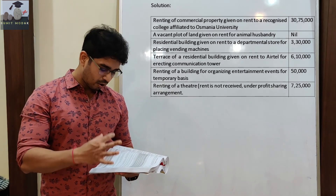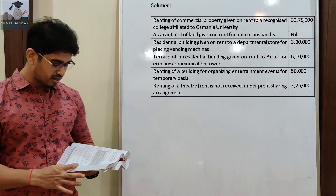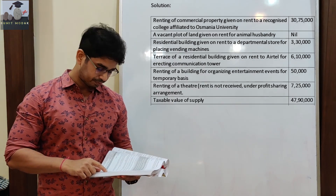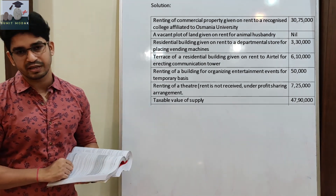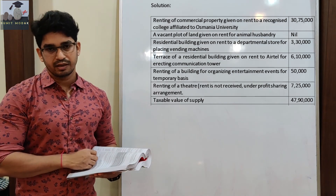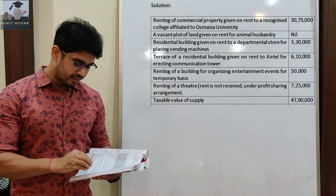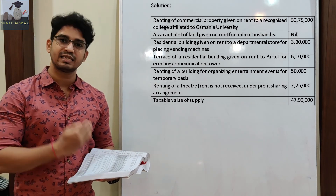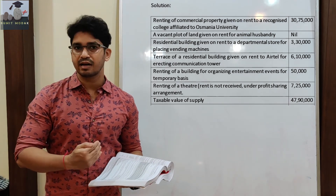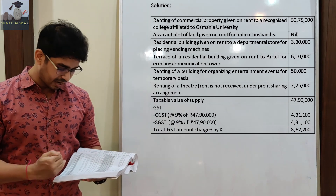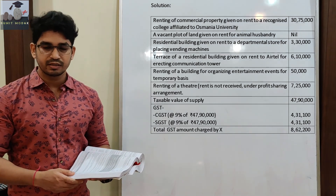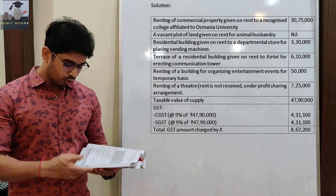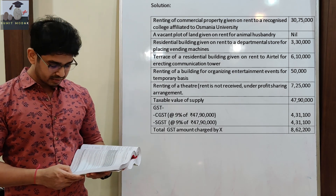So, we will add all these amounts: 30,75,000 + 3,30,000 + 6,10,000 + 50,000 + 7,25,000. We are getting taxable value of supply as Rs. 47,90,000। इस पे GST charge करना पड़ेगा। GST का rate यहाँ पे 18% है। 47,90,000 पे 18% का GST apply करेंगे, लेकिन उसका half — that is 9% — will go to the Central Government as CGST and the remaining 9% will go to Telangana State as SGST. So, 9% of 47,90,000 = Rs. 4,31,100 to Central Government and Rs. 4,31,100 to State Government Telangana. Total GST जो X को pay करना है वो है Rs. 8,62,200।